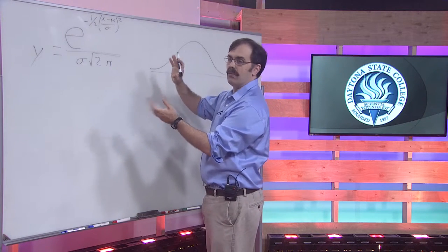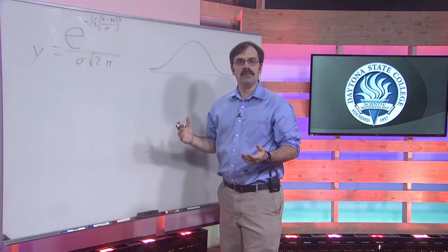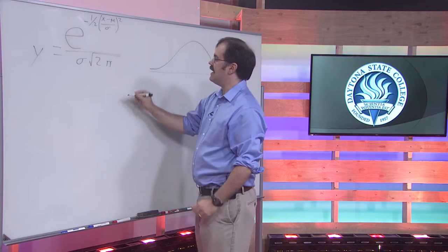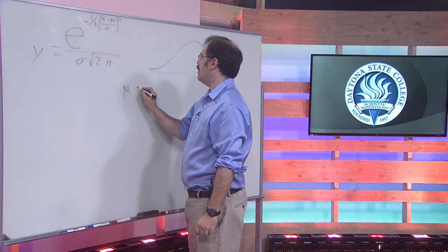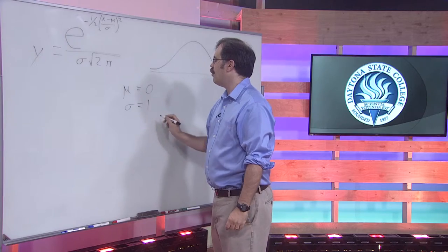So what we'll really be talking about today is what's known as the standard normal distribution. The standard normal distribution has a mean of 0 and a standard deviation of 1.